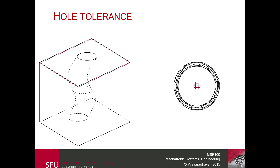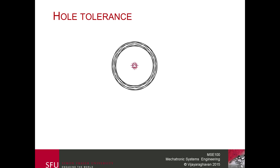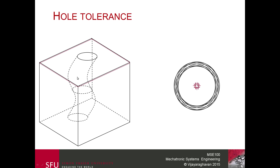Once we have all the center points, we try to find the largest inscribed circle. The largest inscribed circle gives the inner bounding surface for our hole — meaning there cannot be a hole within the boundary that is smaller than that particular surface.